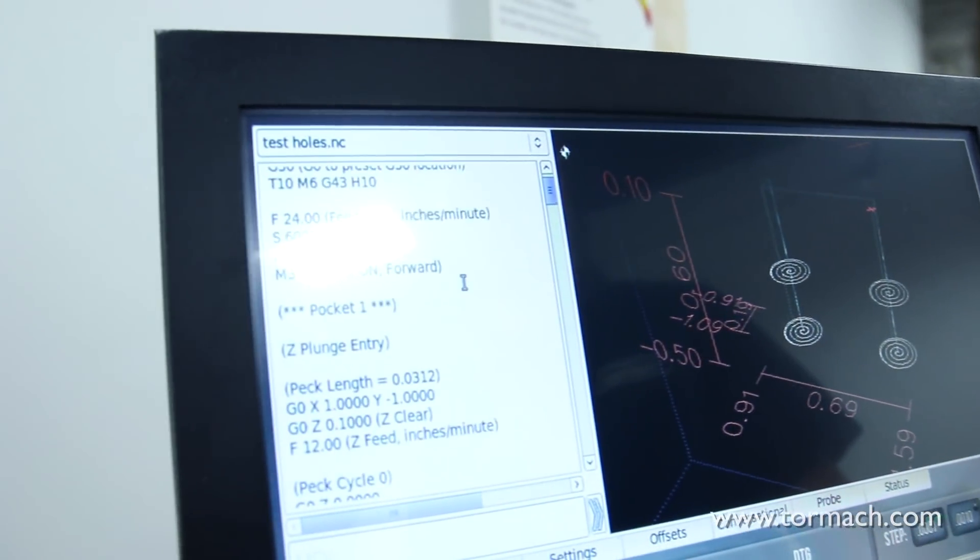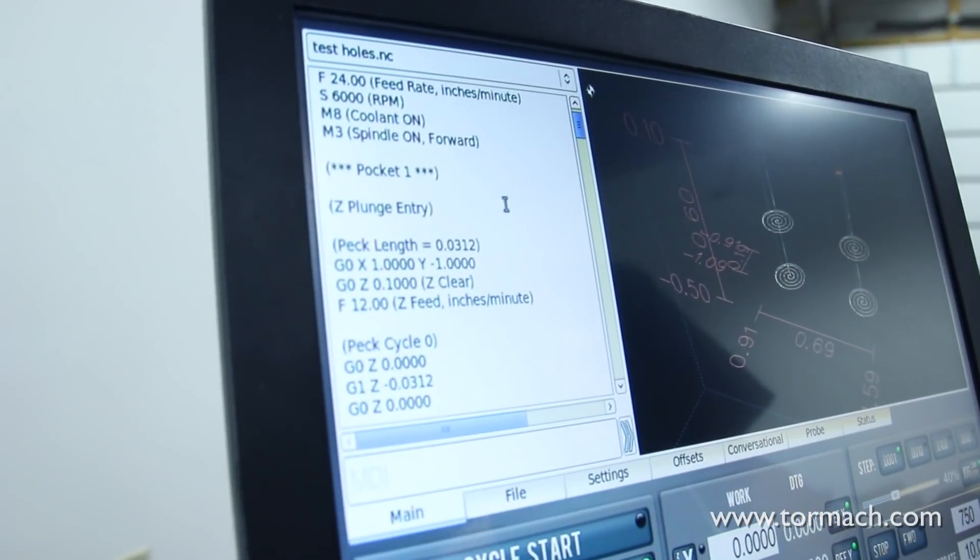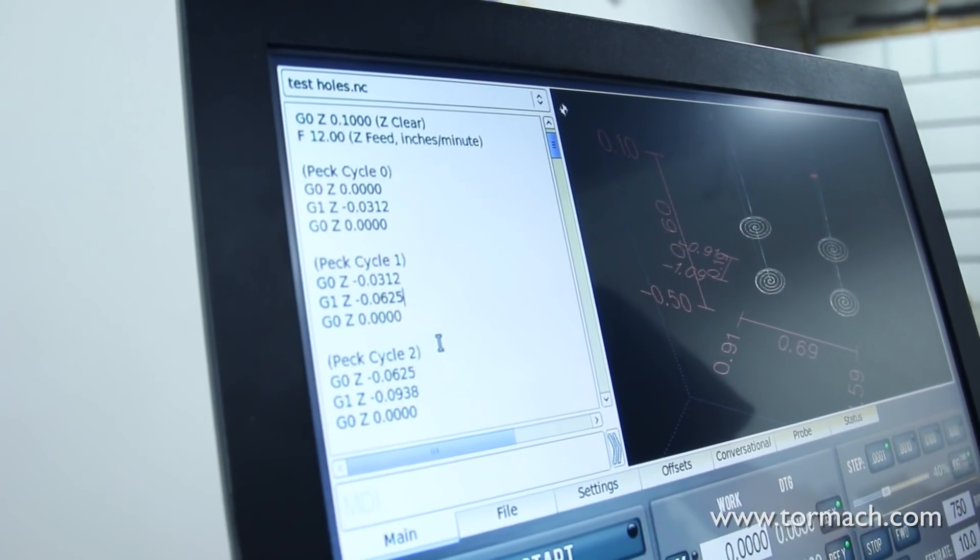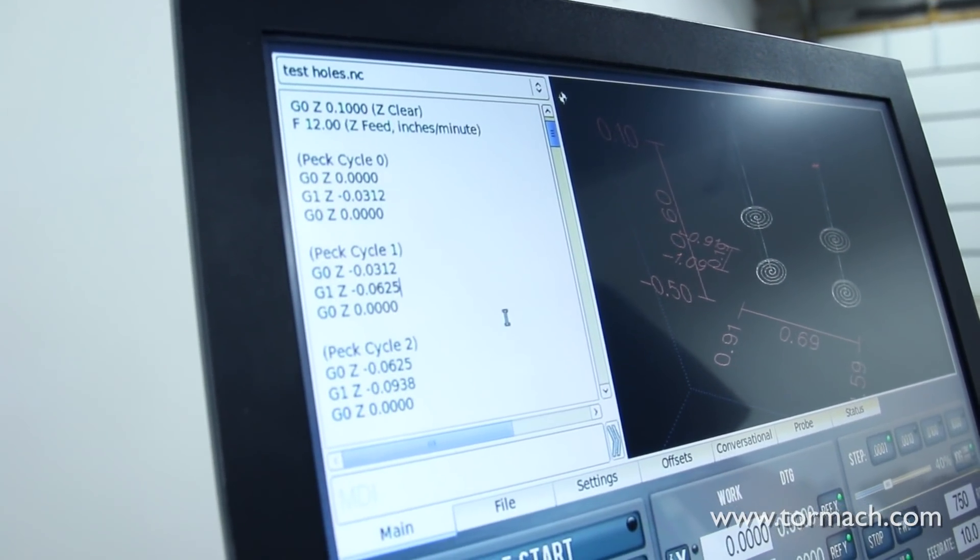If we look through the code here you can see we have a Z plunge entry motion here and it's just a peck drilling cycle, taking small peck moves to get the tool down to our depth of cut. From here we have our program. We already have our work offset and tool defined in the machine, so we can run our program and prove it out.